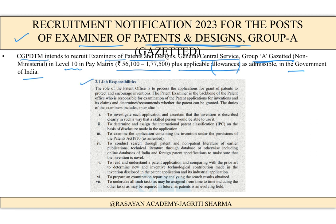Now let's talk about job responsibilities — what does a patent officer do? The role of a patent office is to process applications for the grant of patents, to protect and encourage inventions. The patent examiner is the backbone of the patent office, responsible for examination of patent applications for inventions and their claims.